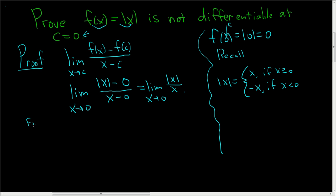First, let's take the limit from the left. We'll look at the limit as x approaches 0 from the left. In this case, x is less than 0, so we have minus x over x.